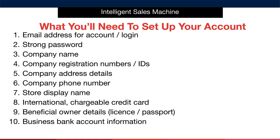The company phone number can be a simple Google or Skype number if you want to set that up instead of using your actual phone number. You need a store display name, which can be different to your company name. You need an international chargeable credit card, and you need beneficial owner details — that'll be your licence or passport details, including the details of whoever is considered shareholders and beneficial owners in the business.